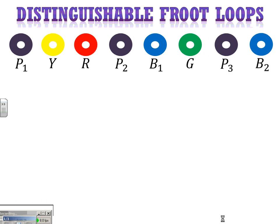Three are purple, two are blue, we have a yellow fruit loop, a red fruit loop, and a green fruit loop additionally, and we say.